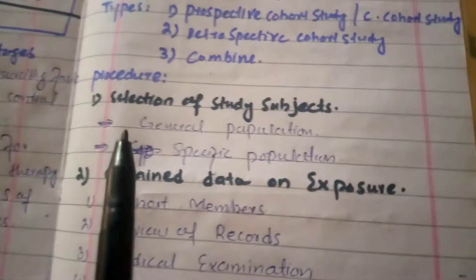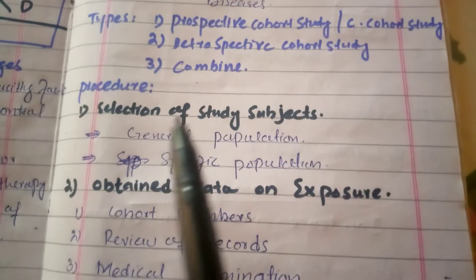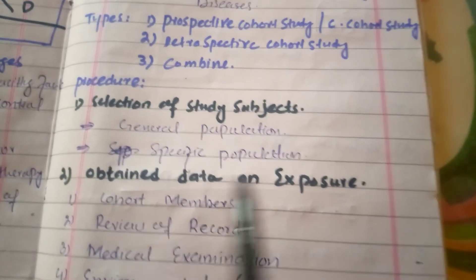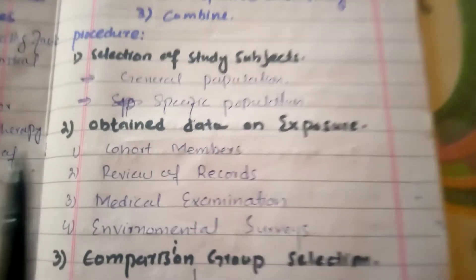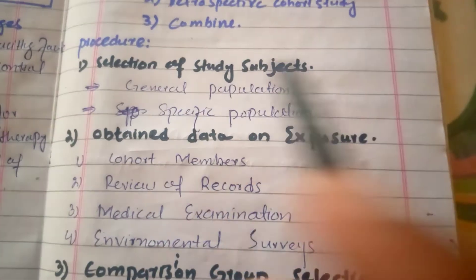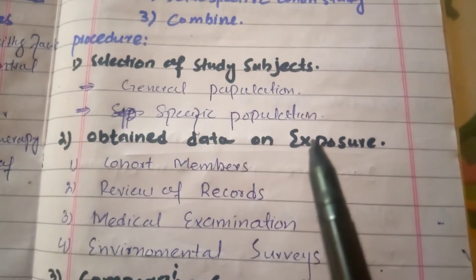Procedure is called selection of study group subjects. Cohort study subjects means cohort selects from the general population or specific population. Then obtaining data on the exposure - we collect data on exposure for subjects which are exposed. From the cohort members we can study the data.